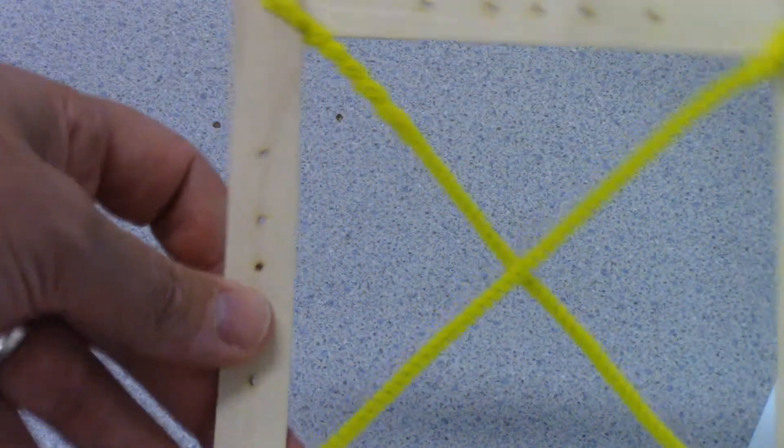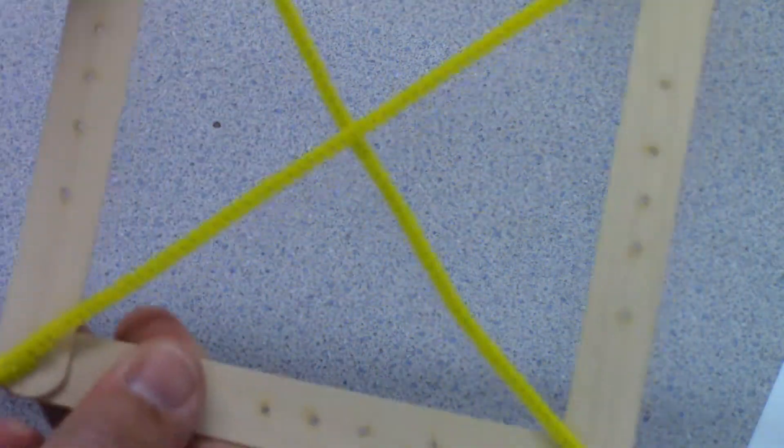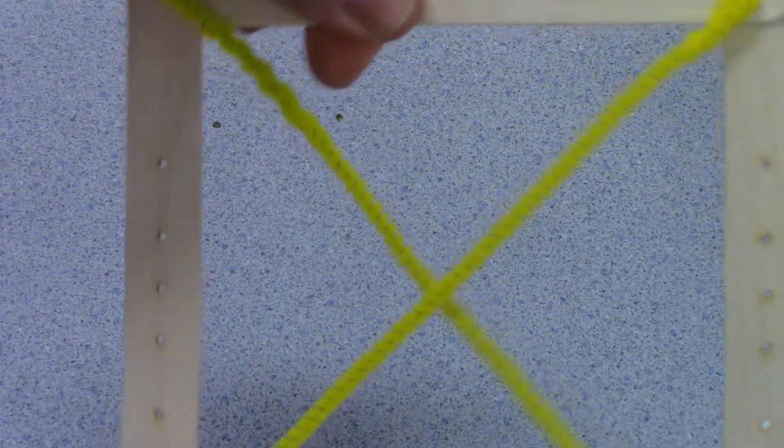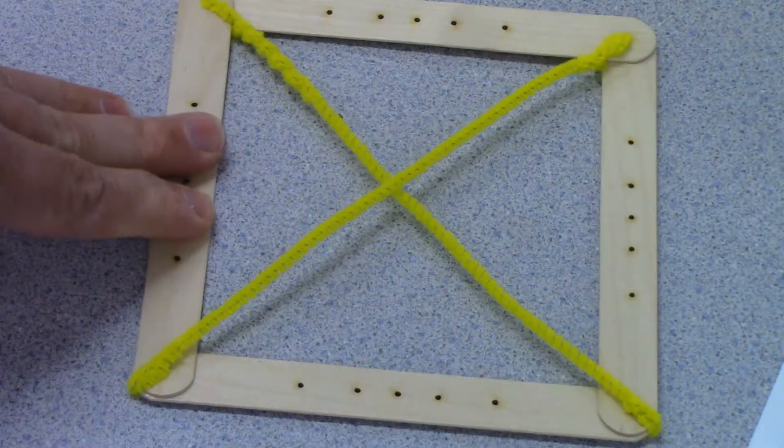Or you could just make a square and then use the pipe cleaners as cross beams and you can show them how cables make everything stronger.